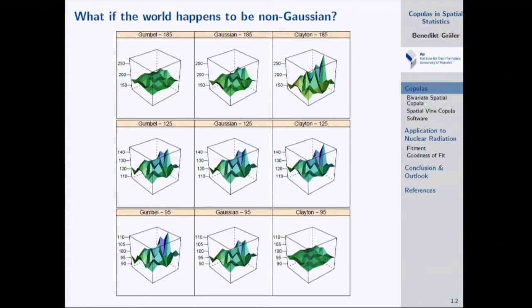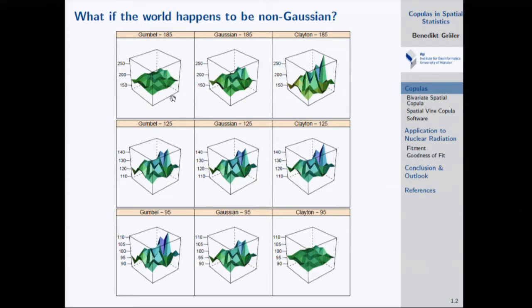The middle column of this plot shows Gaussian dependence structures. On the left is a Gumbel dependence structure; on the right is a Clayton dependence structure. Looking row-wise, the top row shows snapshots of a random field — a wireframe elevation model of some process. Each cell has a certain value; we assume we observe a value of 185, and we'd like to know how the random field looks around it.